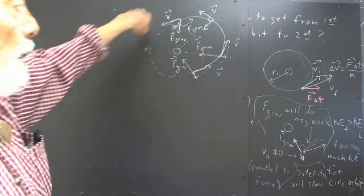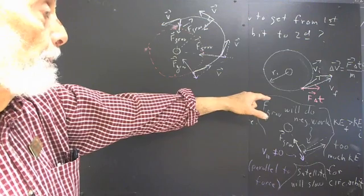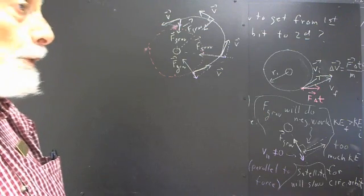But that's a qualitative picture of what happens if we try to change our orbit by delivering some sort of impulse.